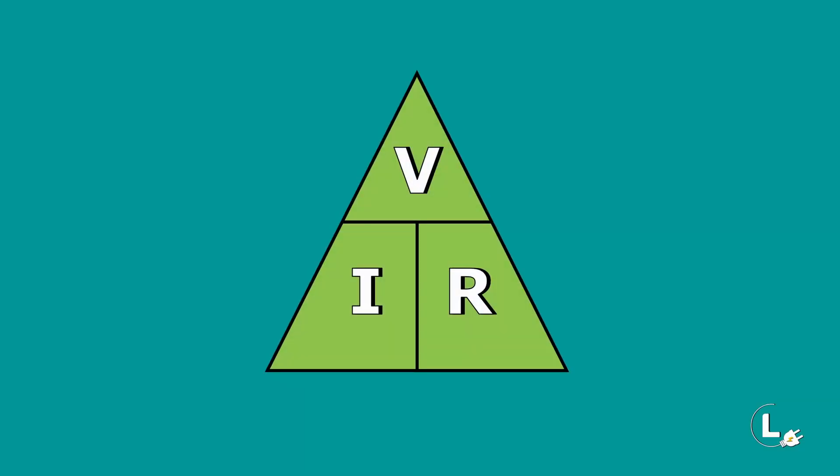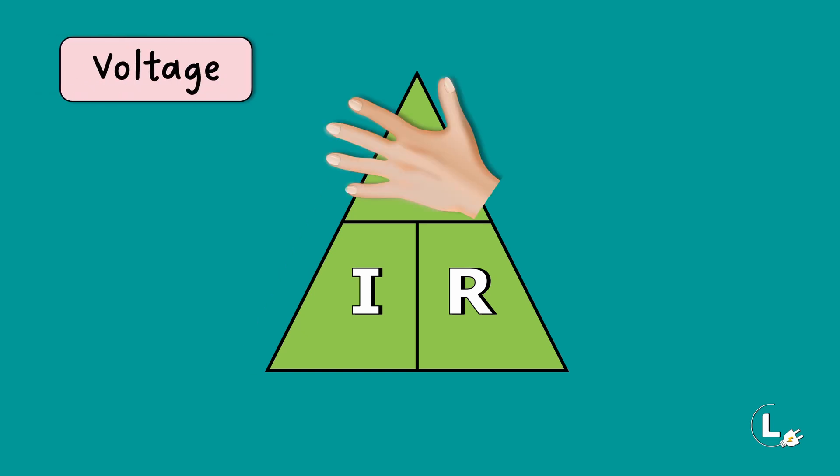You can use this triangle to remember Ohm's Law. To find the formula for voltage, cover the letter V. The visible parameters will give the formula. Here, we get I multiplied by R.